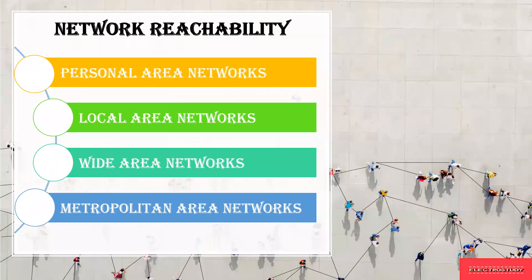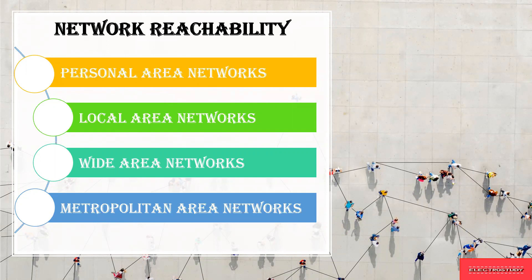You can see different kinds of network reachability mentioned here. These are the types of networks where each kind has its own reachability: Personal Area Network (PAN), Local Area Network (LAN), Wide Area Network (WAN), and Metropolitan Area Network (MAN). These are the types of networks available, each with its own reachability.